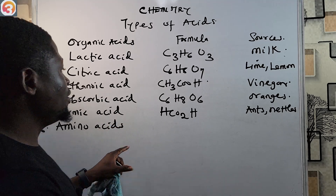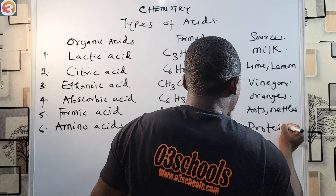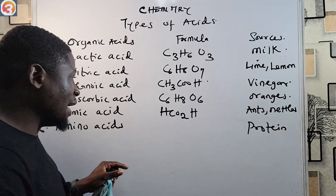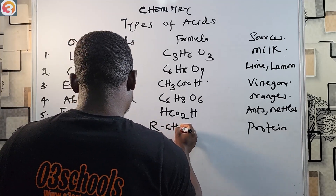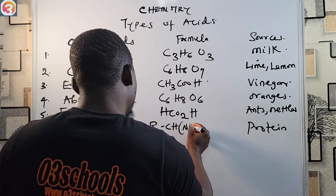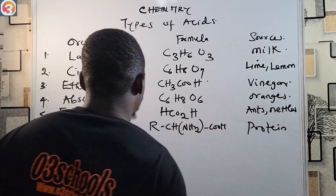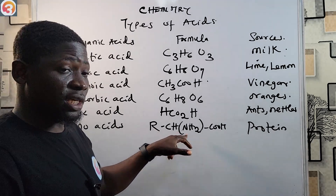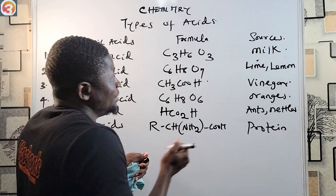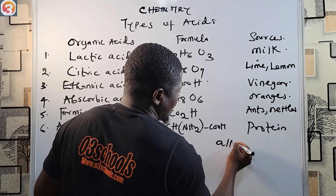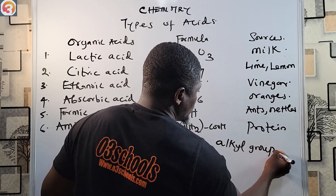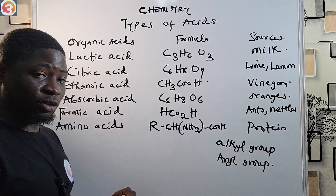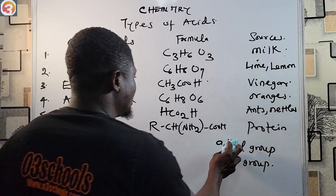Number six: amino acids. Amino acids are gotten from protein and have the general formula R-CH(NH₂)-COOH, where R can be an alkyl or aryl group. We will discuss these groups further in organic chemistry.